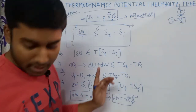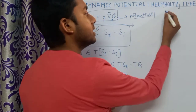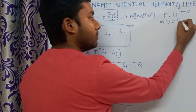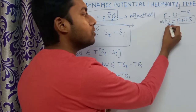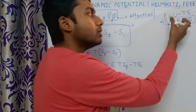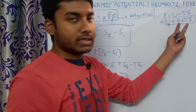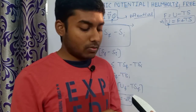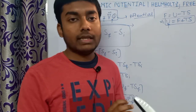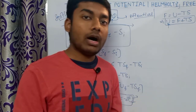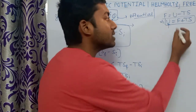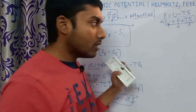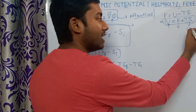We have defined F equals U minus TS, which means U equals F plus TS. The internal energy of the system has two contributions: one from Helmholtz free energy F, which is the energy available for work — the energy that can be converted into work — and the other from TS, which is latent energy unavailable for work. So F is available energy and TS is unavailable energy.